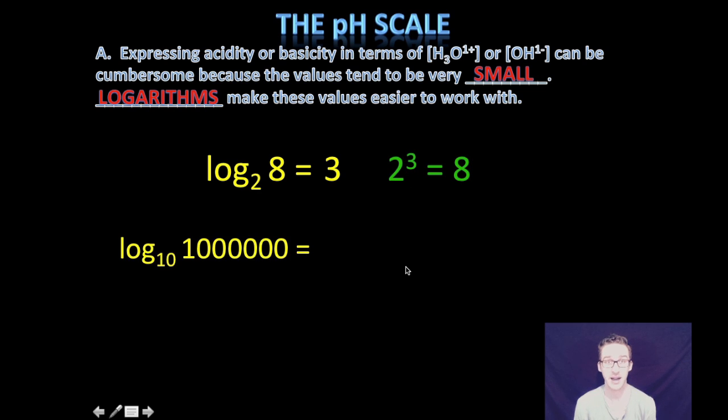Now, lucky for us, in chemistry, we are simply going to stick to log base 10 or common logs. And many times this 10 is not included. It's understood when there is no number written there that we're talking base 10. So if I gave you log base 10 of a million and you wanted to know what that answer was, you're thinking to yourself, what number do I have to raise 10 to, to get to a million? You came up with the answer six, you would be correct. Again, think about 10 to the sixth will give me one million.